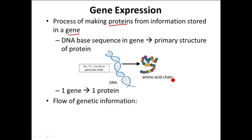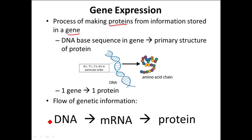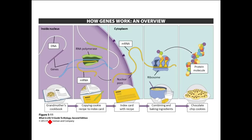The flow of genetic information is not just from the DNA directly to making the protein. There's an intermediary between that. We start at the DNA, and the information carried by the base sequence is used to make something called mRNA, and then the protein is made from the mRNA. This is just an overview — we're going to be going through all of these in detail — using this great analogy of a cookbook and making something from a cookbook.